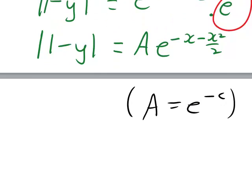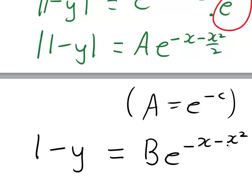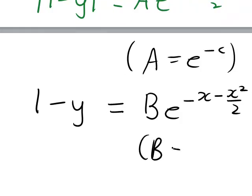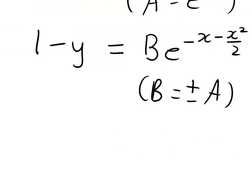The modulus can also be dealt with. e is always positive, and A, since it was a power of e, is positive, so if we're going to remove this modulus, we need to replace A with another constant B that can take positive or negative values. That constant B equals plus or minus A.